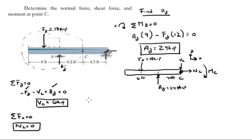And last but not least, assuming clockwise is positive, we know that the sum of the moments at C equals 0. So MC plus the moment created by AY, which is a clockwise moment, AY times 4.5, because from C to AY is 4.5 feet.